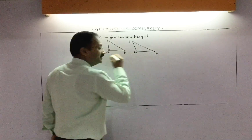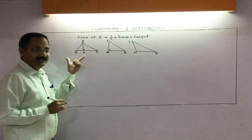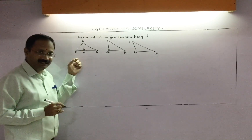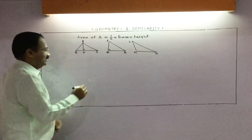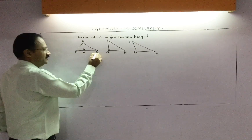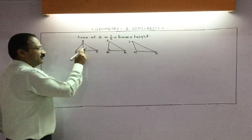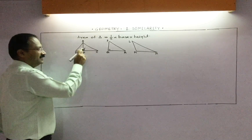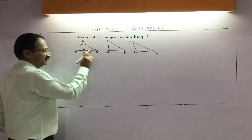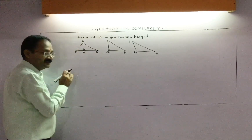These are the three triangles. Now can you tell me the height of the first triangle? AD is the height and BC is the base. Why? Because AD makes a 90-degree angle with the base. Therefore AD is height and BC is base.